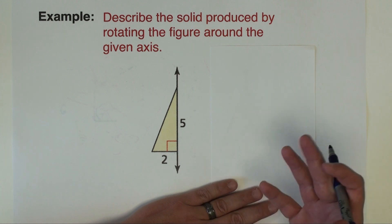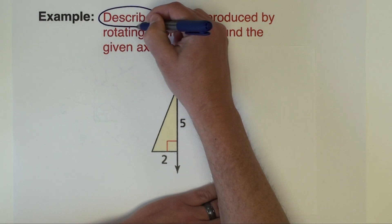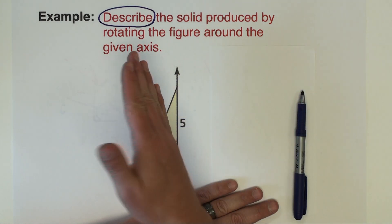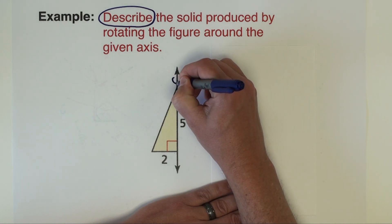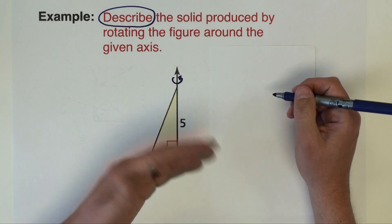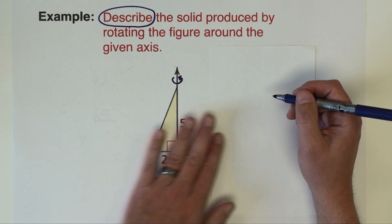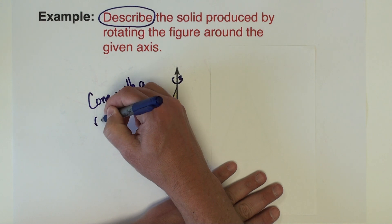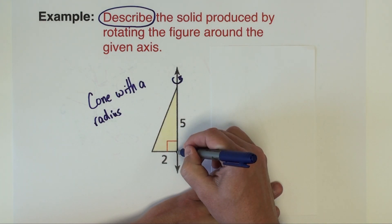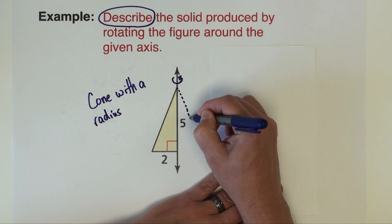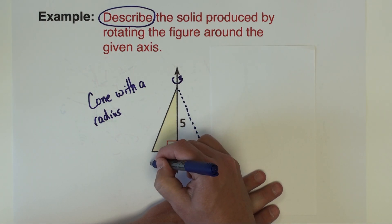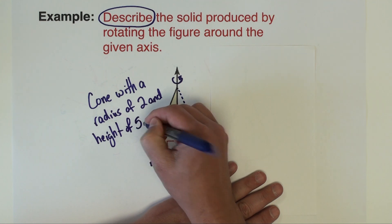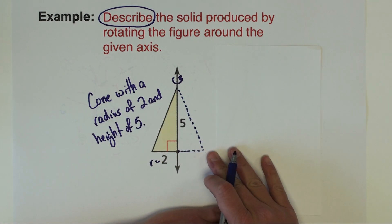Okay on to our final example, same directions describe the solid produced by rotating the figure around the given axis. So here we've got just a triangle we're going to take that triangle we're going to rotate it around this axis right here. So if I do that, if I can envision this kind of coming off the paper and going back around, what's going to happen? I think what we're going to see is a cone with a radius. So think about it rotating so that we've got the same thing over here on this side and coming off the paper. So this is the center. I would make the radius down here two and I would have the height of this cone of five and let's see if that's what it does in fact look like.